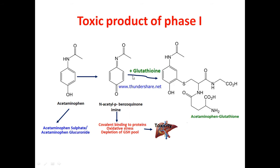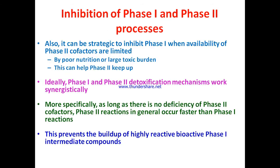The conjugation with glutathione is therefore important for acetaminophen detoxification. It can also be strategic to inhibit phase one when availability of phase two cofactors is limited due to poor nutrition — the cofactors for phase two will be available at lower concentration, so in such cases phase one needs to be slowed or inhibited.